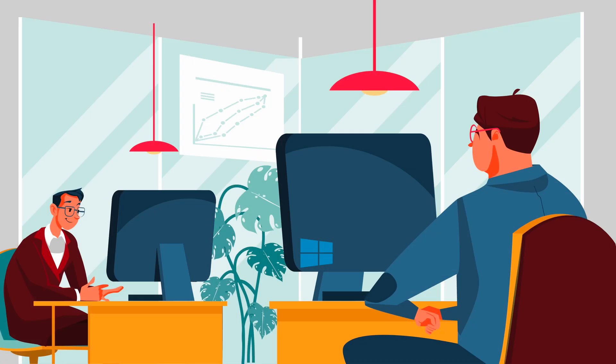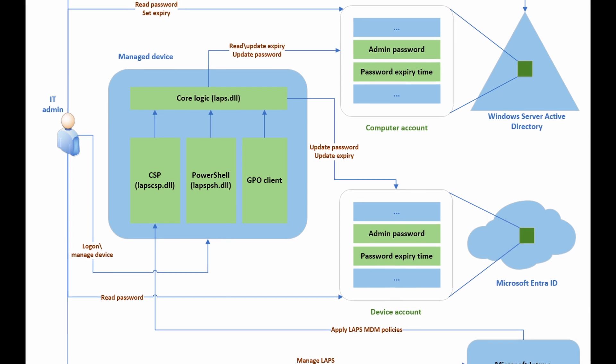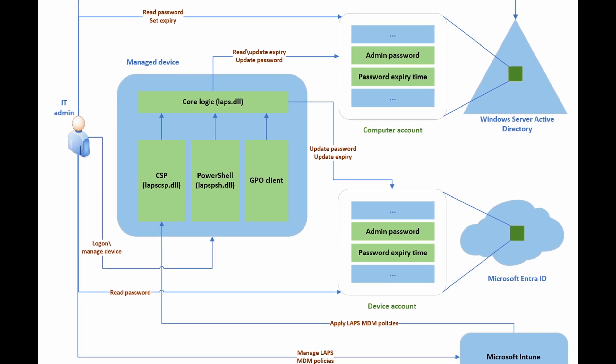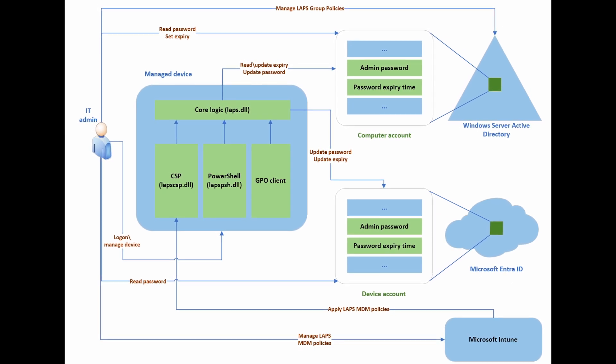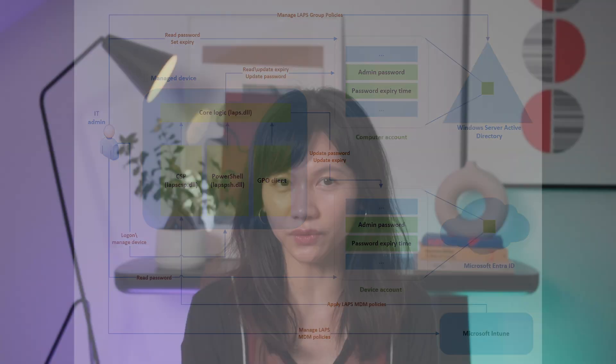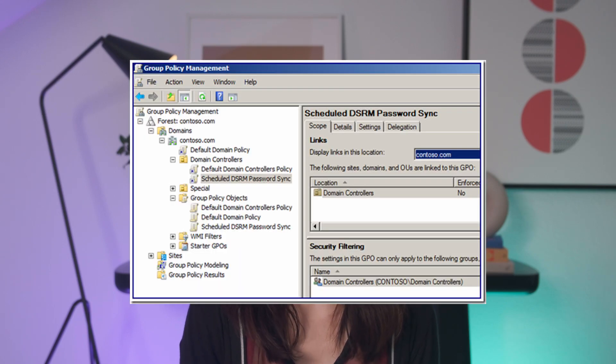To start, Windows LAPS, or Windows Local Administrator Password Solution, is a Windows feature that automatically manages and backs up the password of a local administrator account on your Microsoft Entra-joined or Windows Server Active Directory joined devices. You can also use Windows LAPS to automatically manage and backup the Directory Services Restore Mode (DSRM) account password on your Windows Server Active Directory domain controllers.